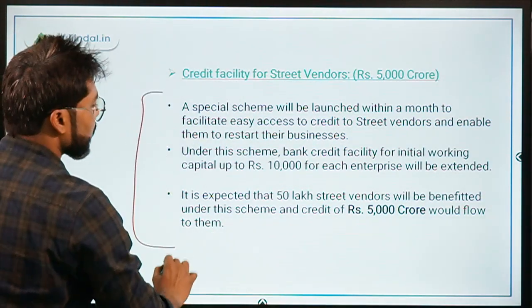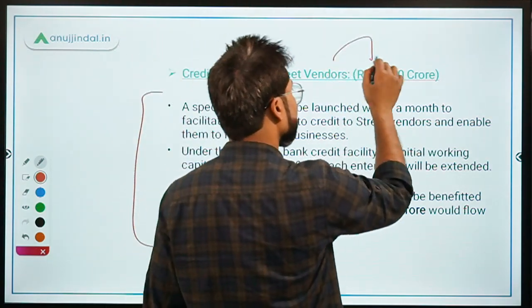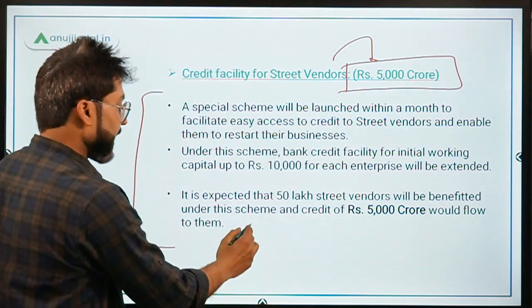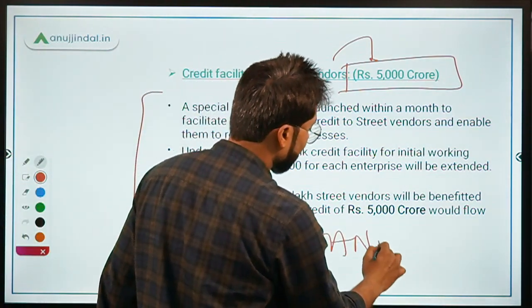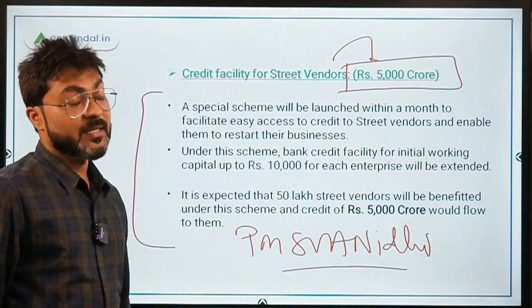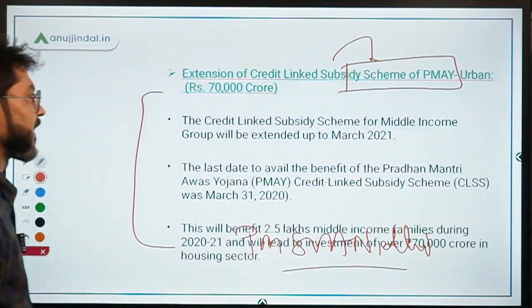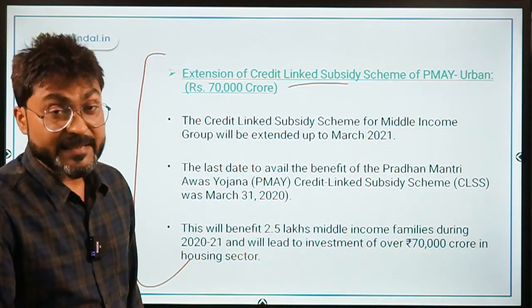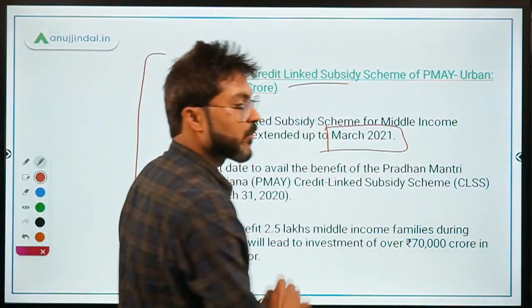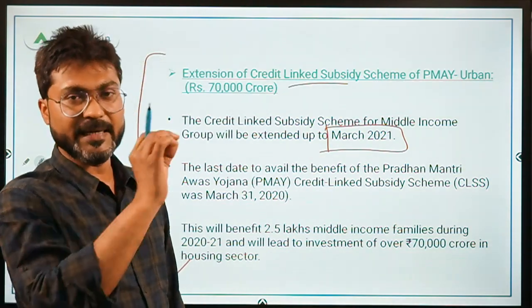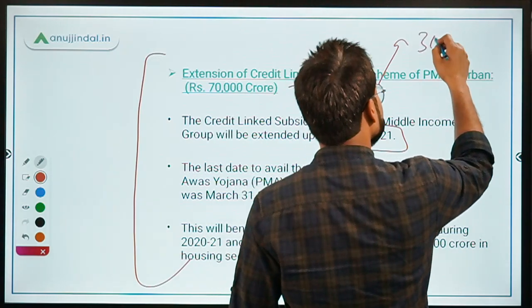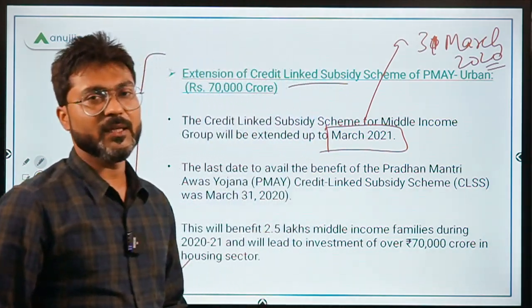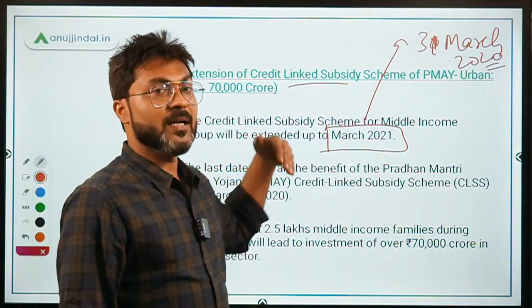₹5,000 crore was provided as credit facility for street vendors, under which the PM SVANidhi scheme was later launched, providing ₹10,000 as a one-year loan to street vendors. The Credit Linked Subsidy Scheme under Pradhan Mantri Awas Yojana Urban was extended from 31st March 2020 to 31st March 2021.